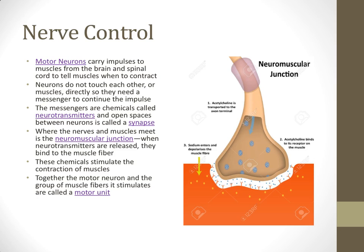One interesting thing about muscle contraction is that muscles can't decide when to contract on their own. They have to be told to contract by either the brain or the spinal cord. But since most muscles are nowhere near the brain or the spinal cord — like your bicep, for example — there has to be some kind of messenger that gets the signal from the brain all the way to the muscle. That messenger is called a motor neuron, which is a nerve that carries an impulse from the brain or spinal cord and tells the muscle it's time to contract.